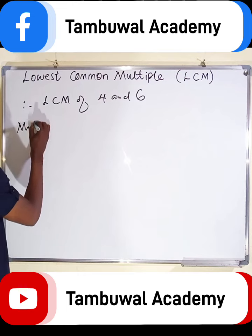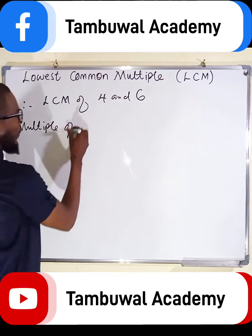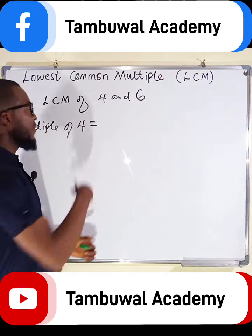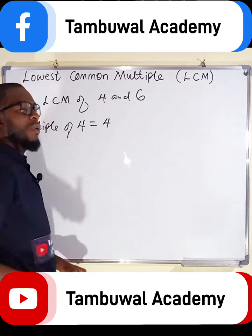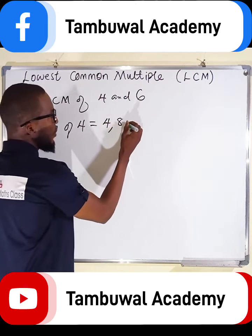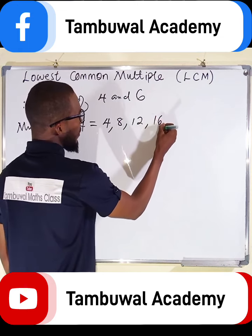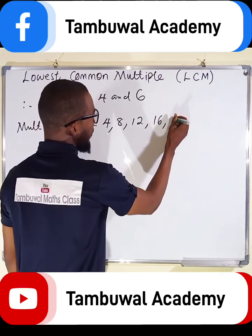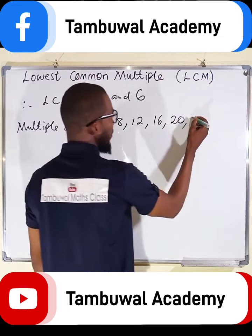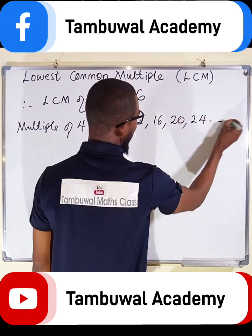Multiples of four, from the multiplication table: four times one is four, four times two is eight, four times three is twelve, four times four is sixteen, four times five is twenty, four times six is twenty-four. Let us stop here.